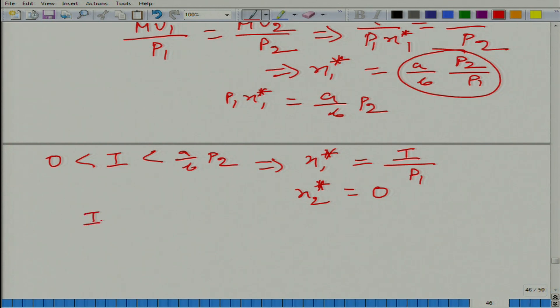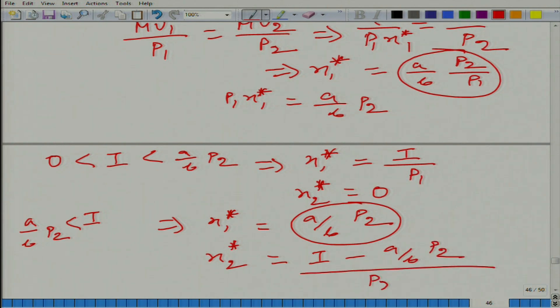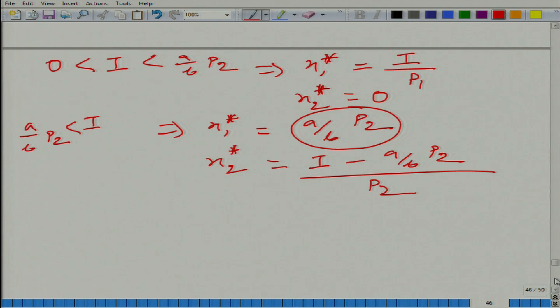What if he has, what if it is more than a by b*p2? What happens in this case? x1 star is going to be equal to a by b*p2, and how about x2 star? Because this much is going to be spent on good 1. So it is going to be i minus that quantity, divided by p2. So can you say anything, can you make any comment about this scenario?